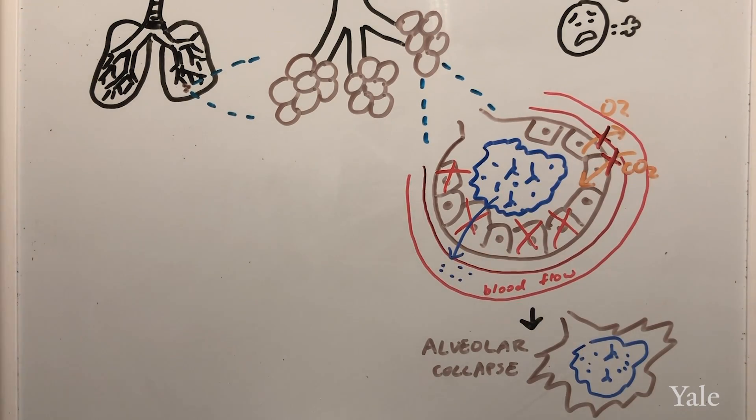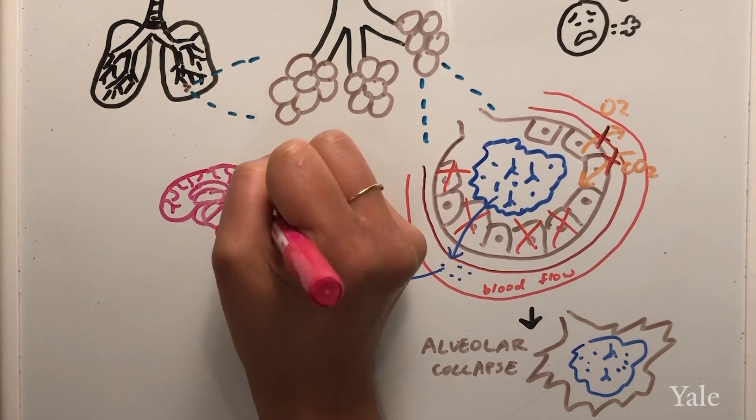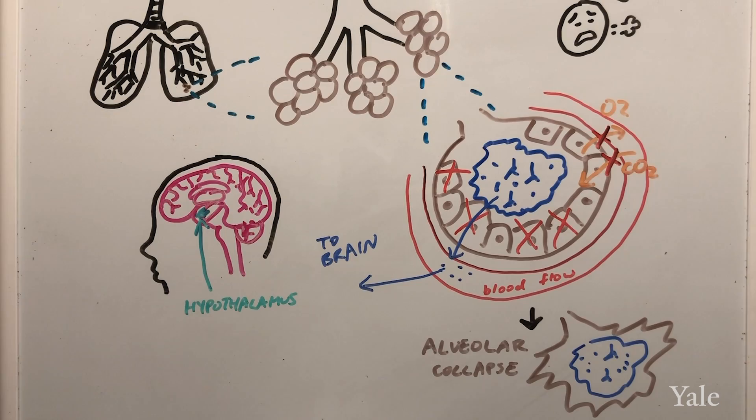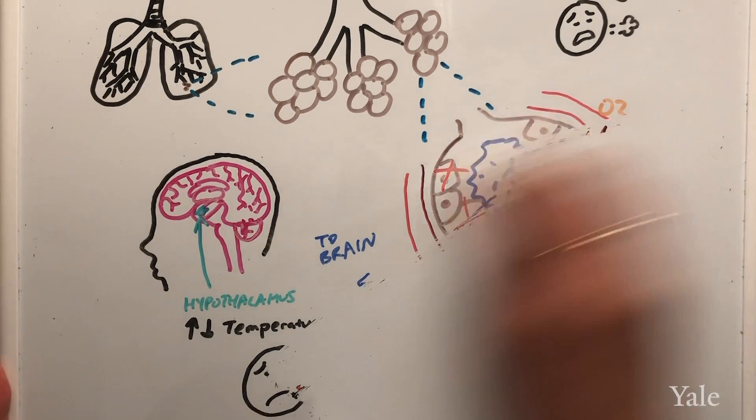Additionally, specific proteins are released as an immune response into the blood or they travel up to the brain to a region called the hypothalamus. One of the things the hypothalamus regulates is temperature. The proteins signal to your hypothalamus to increase body temperature, leading to fever.